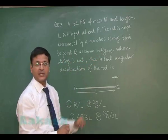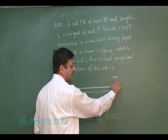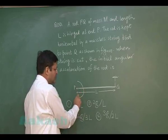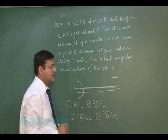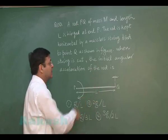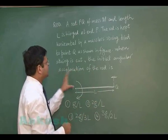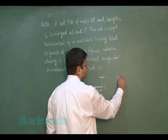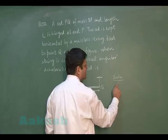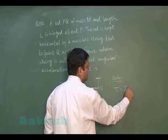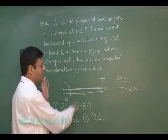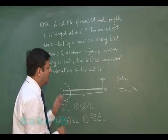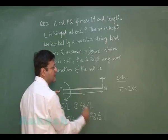When the string is cut, the rod will tend to rotate under the influence of the torque due to the weight of the rod. The initial angular acceleration is demanded. Simply use the equation torque = Iα about point P, since this is a case of rotation about point P.